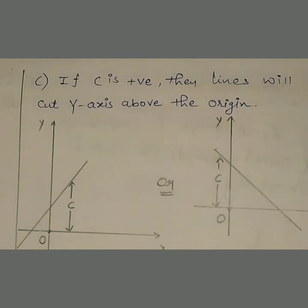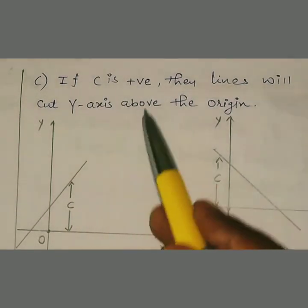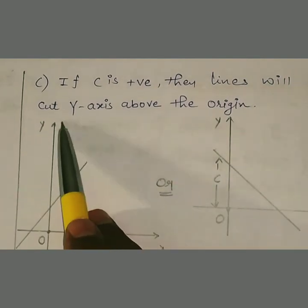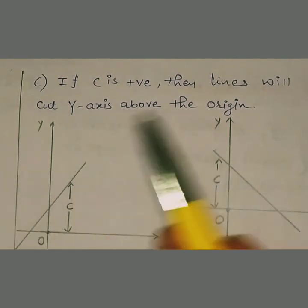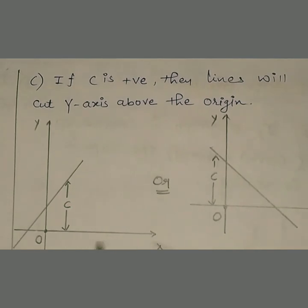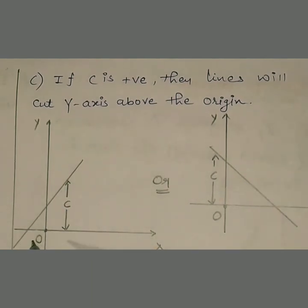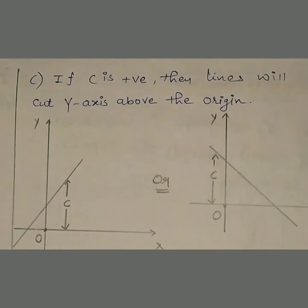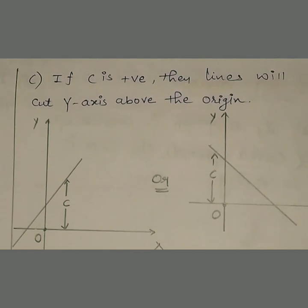Third characteristic: if c is positive — that is the intercept is positive — then lines will cut the y-axis above the origin। तो y-axis को above the origin cut करेगी। यहाँ पर आपका x-axis है, y-axis है, intercept c है — you can clearly see that the line is above the origin and cutting the y-axis।